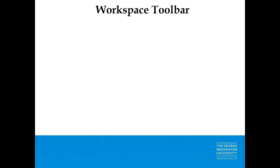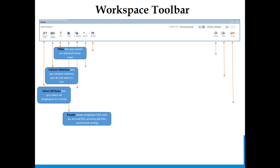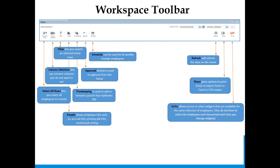The workspace toolbar, going left to right: Select All Rows lets you select all employees in a Genie. Column Selection lets you remove columns you don't want to see. Filter lets you search selected Genie rows. People shows employee info such as accrual info, primary job info, and meal break settings. Timekeeping is used to add or remove punches and replicates TRS. The Approval button approves from the Genie. Schedule can be used for bi-weekly exempt employees. Refresh refreshes the Genie data. Share gives options to print or export the Genie in Excel or CSV format. Go To allows access to other widgets for the same selection of employees without re-selecting a time period.